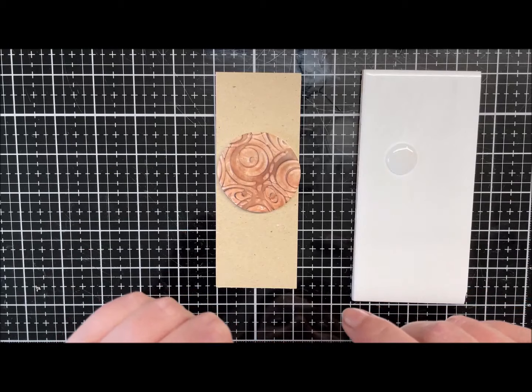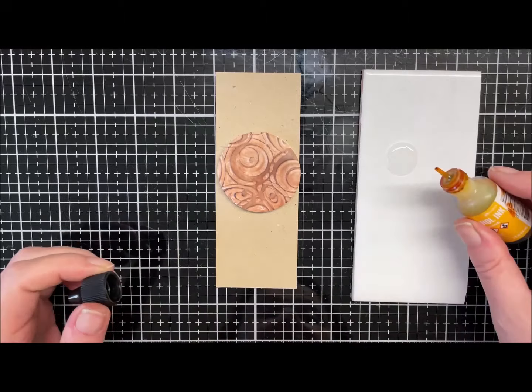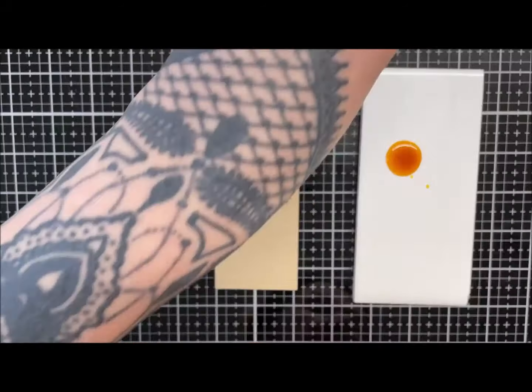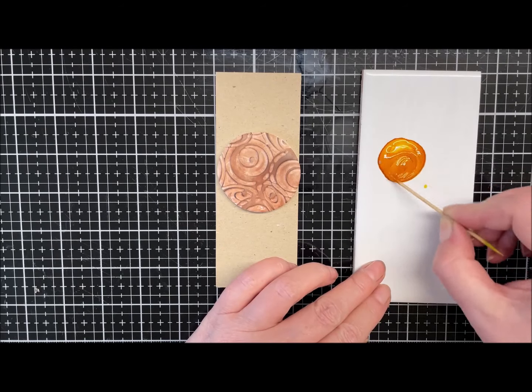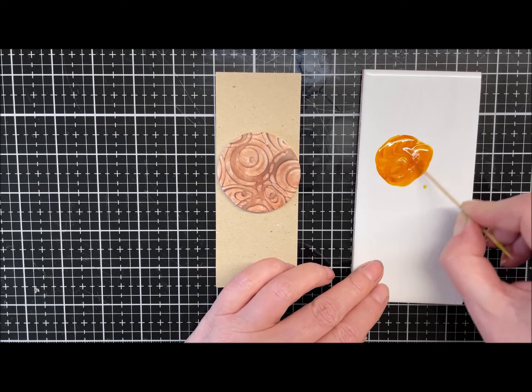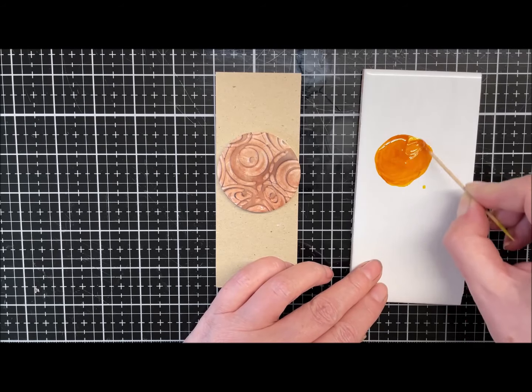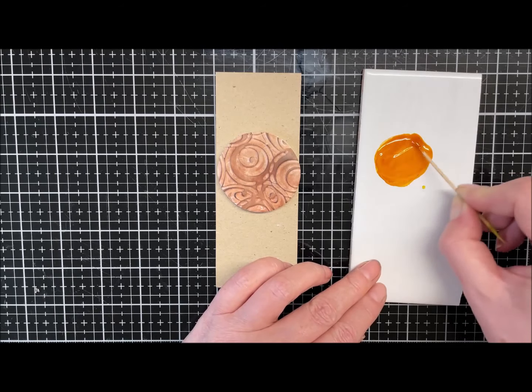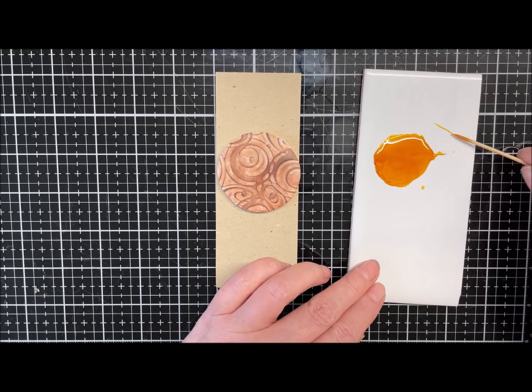Same as we did in the other video guys, I'm just going to put about a teaspoon full on my tile and add some alcohol ink. I think I'll do two drops of this amber because it's quite a faint color, and I'm just going to mix that in. There we go.